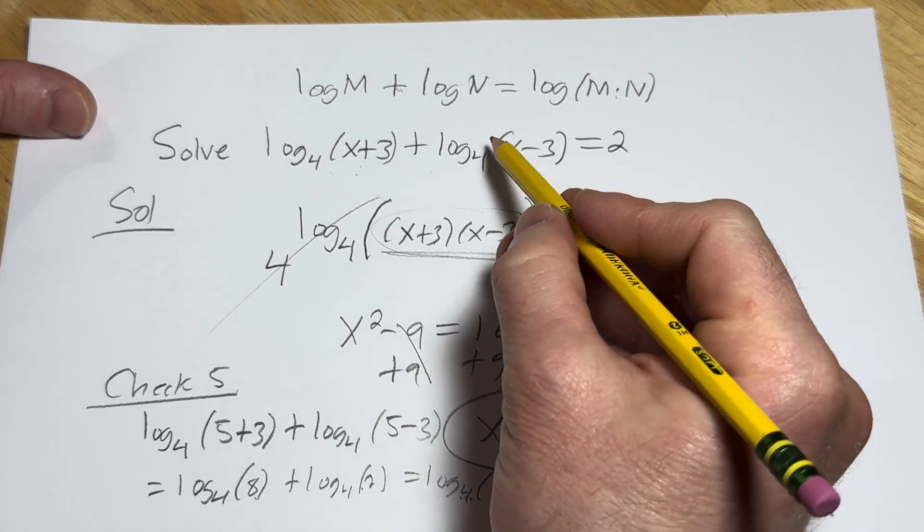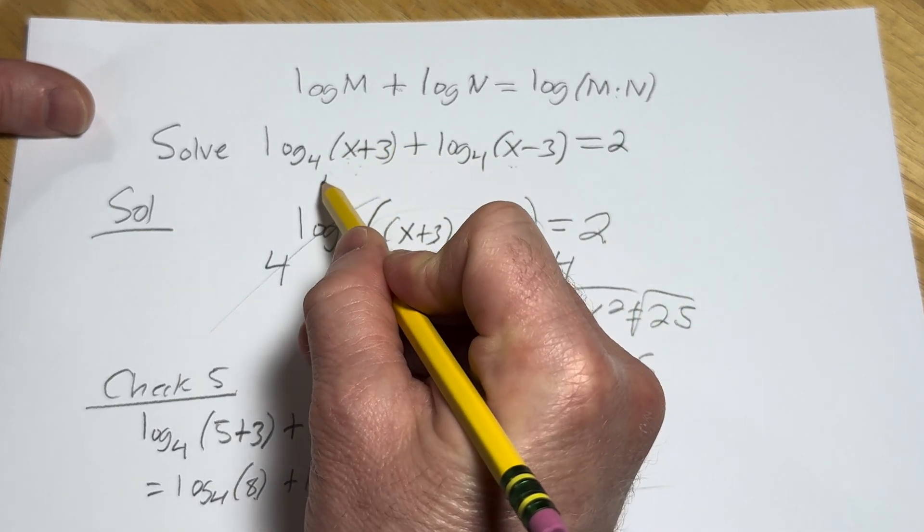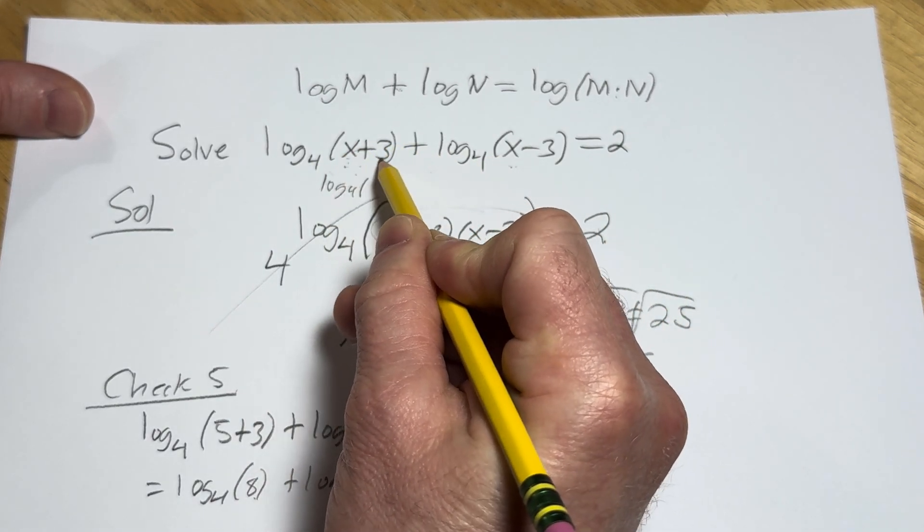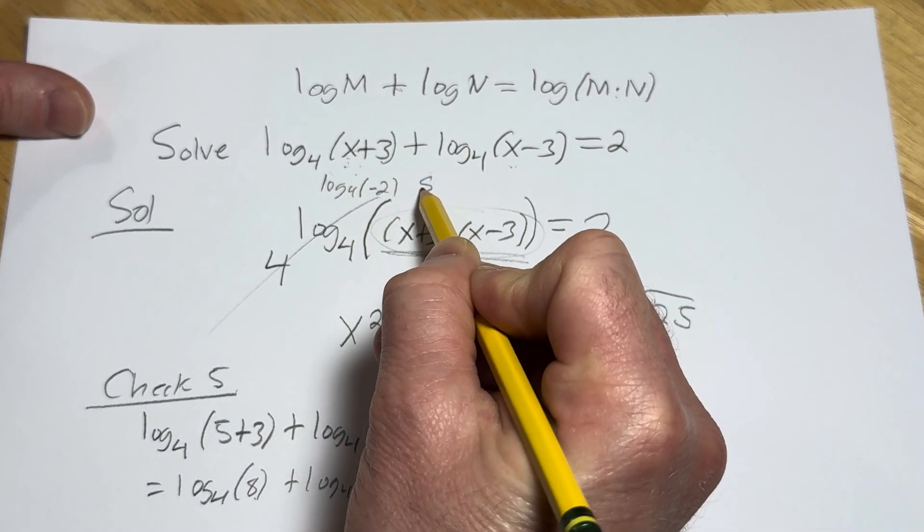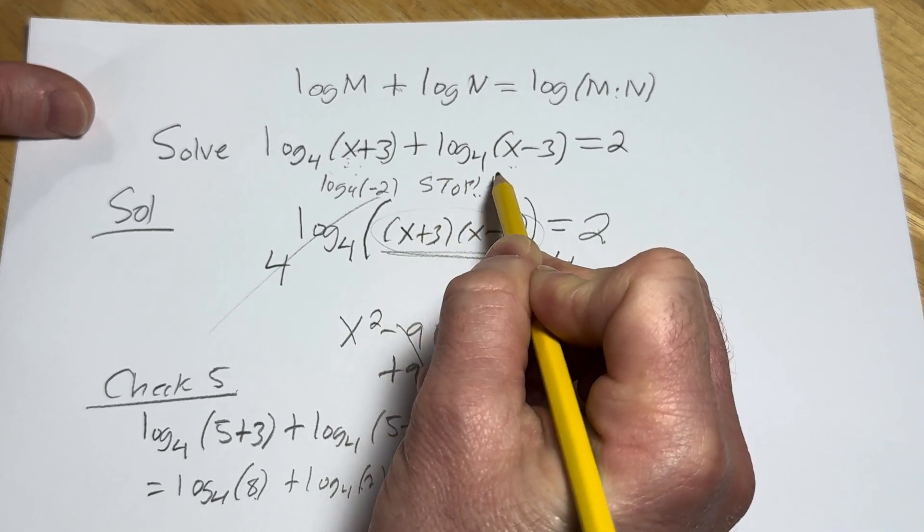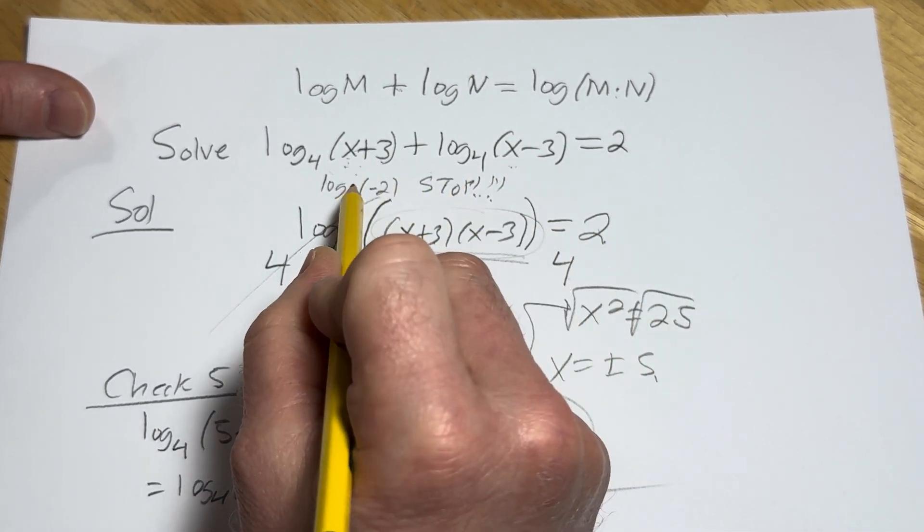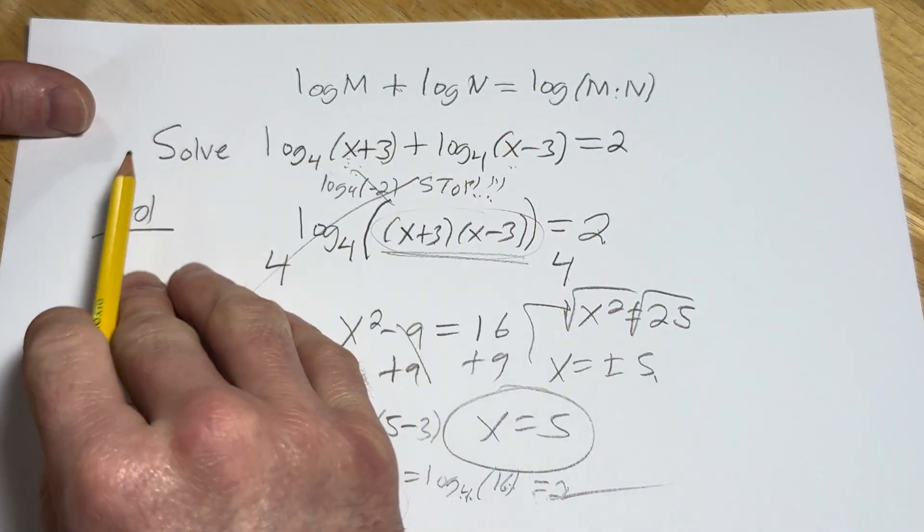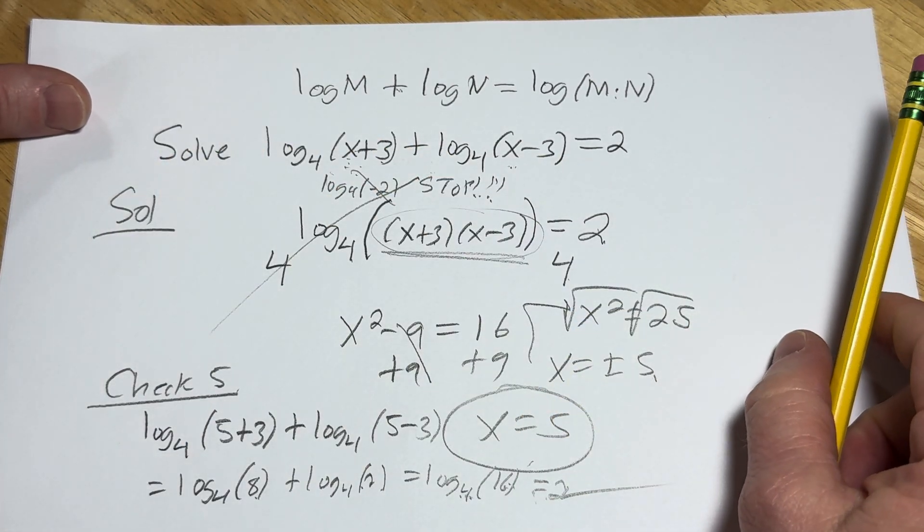Negative 5 does not work. You can just look here. If you put a negative 5 here, you get log base 4. Negative 5 plus 3 is negative 2. And this is where you stop. Don't keep going, right? You can't take the log of a negative number. It doesn't make any sense. So the answer is just 5.